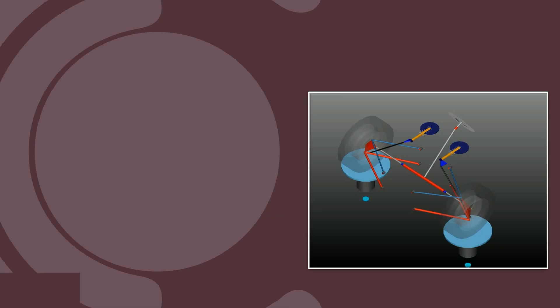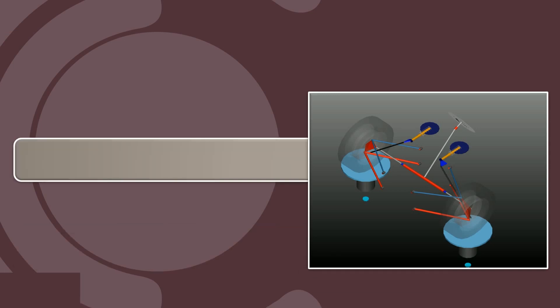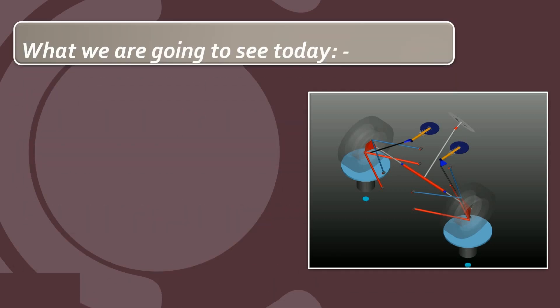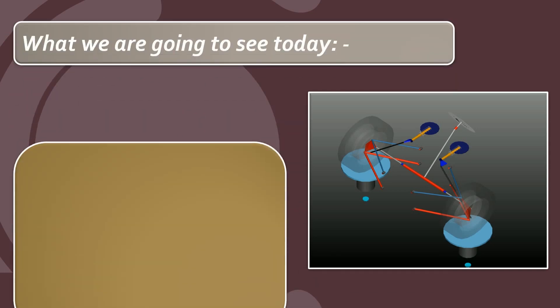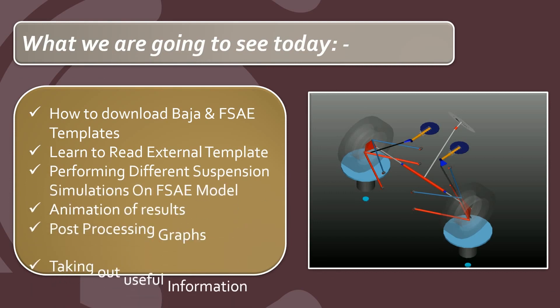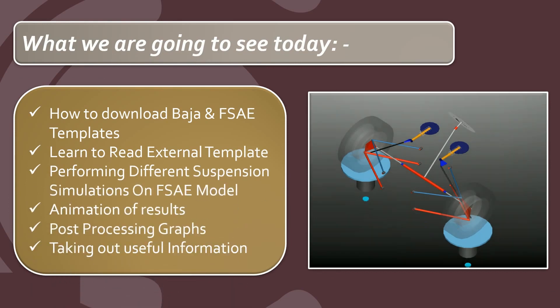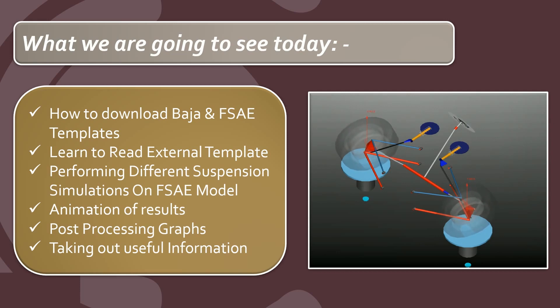Today we will be performing different suspension simulations on an FSAE model. For FSAE geometry we will perform totally different simulations than we saw on Baja geometry. The analyses covered are: steering, static load, static vehicle characteristics, and external files. We will also cover animation of results, post-processing graphs, taking out useful information, and how to download Baja and FSAE templates to learn to read external templates.